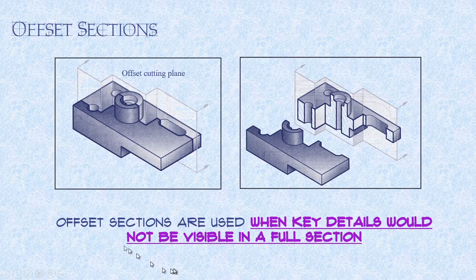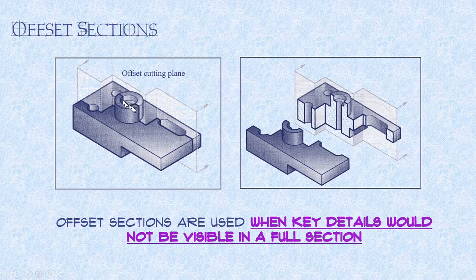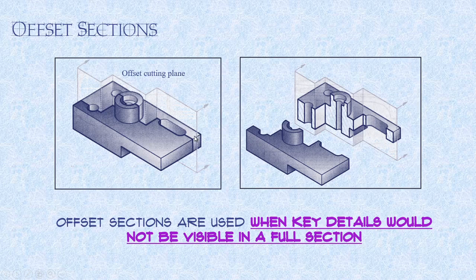Offset sections are used when key details would not be visible in a full section. If I cut a full section all the way through, all I could expose would either be this hole or this feature here, which I'm not sure what exactly fits in there, some type of spindle or bolt head or something, this slot. So what we do is an offset section. We cut part of the way through, then we jog backwards, cut through a little bit more, jog backwards, cut through again.